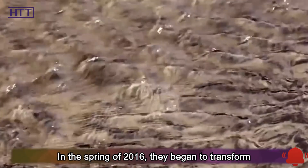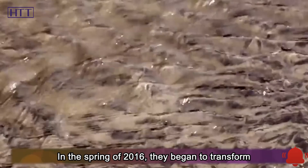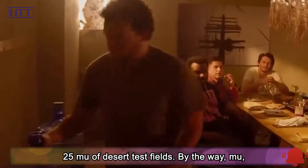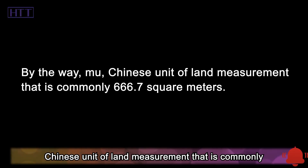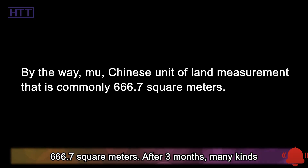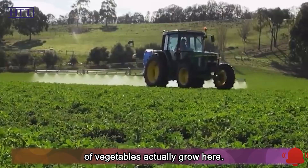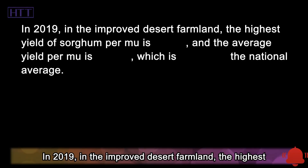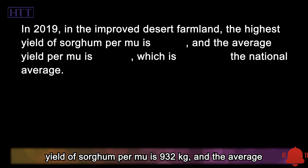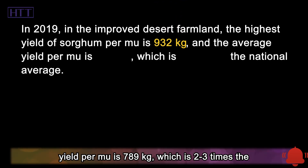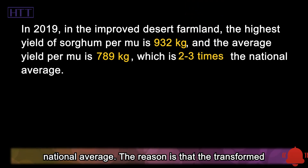In the spring of 2016, they began to transform 25 mu of desert test fields — a mu being a Chinese unit of land measurement equal to approximately 666.7 square meters. After three months, many kinds of vegetables were actually growing there. By 2019, in the improved desert farmland, the highest yield of sorghum per mu reached 932 kilograms, and the average yield per mu was 789 kilograms — two to three times the national average.